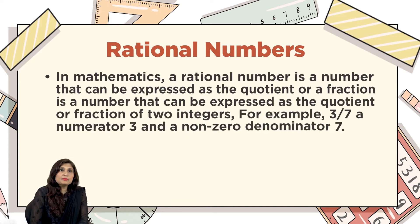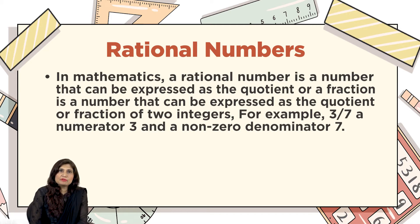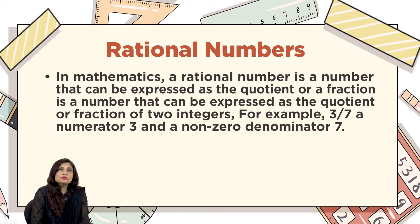In mathematics, a rational number is a number that can be expressed as a quotient or a fraction of two integers. For example, look at the number 3/7 — in this number, 3 is the numerator and 7 is the denominator. You should remember the denominator should always be a non-zero number.